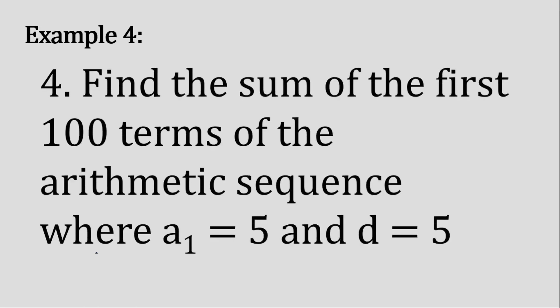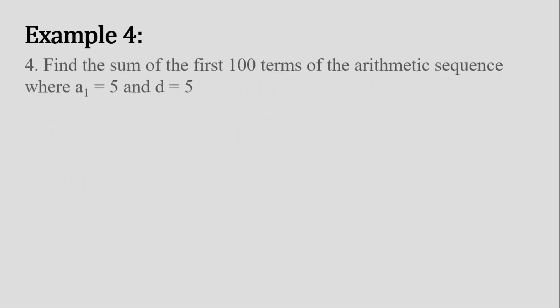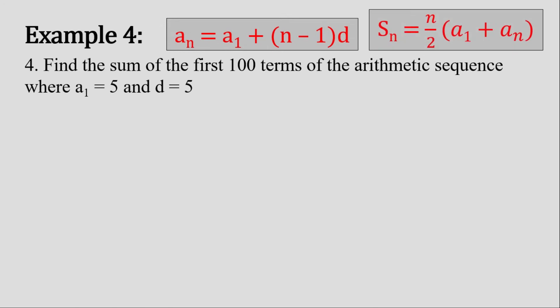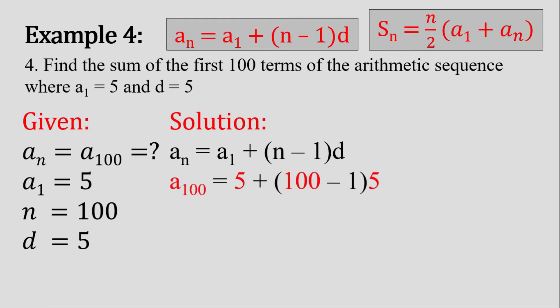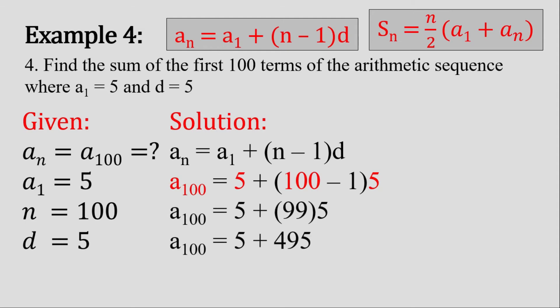Example number 4. Find the sum of the first 100 terms of the arithmetic sequence where a sub 1 is 5 and common difference is 5. Let's write the two formulas we're going to use and write all the given. Our main purpose is to find a sub 100. Substituting all the givens: 99 times 5 is 495, plus 5 gives us 500 for a sub 100.